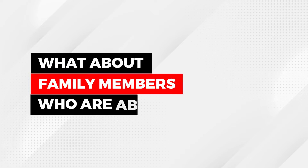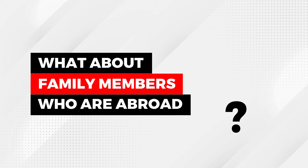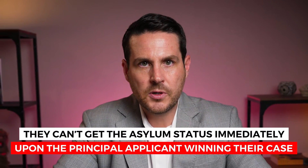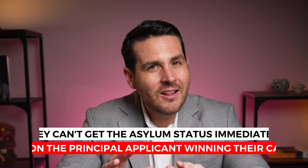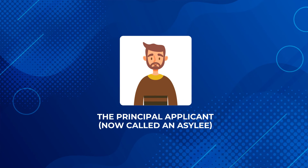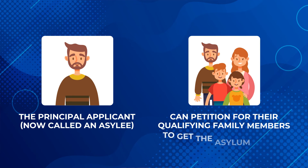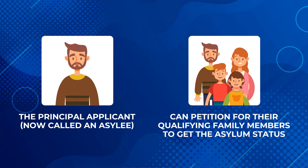So what about family members who are either abroad or are not on the same track as the principal applicant? Are they just out of luck? It's true that they cannot get asylum status immediately upon the principal applicant winning their case, but all is not lost. After getting asylum, whether that's granted by USCIS or an immigration judge, the principal applicant — now called an asylee having won their case — can petition for their qualifying family members to eventually get asylum status too. Remember, those qualifying family members are your spouse as well as your children who were under 21 when you applied for asylum and who remain unmarried through the time that they are approved for asylee status by way of the petition that you're submitting for them.